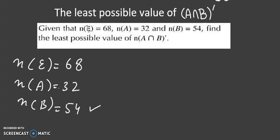So clearly B is the largest set whereas A is the smaller set. We have to find the least possible value of A intersection B whole complement; the number of elements in this set should be the least.